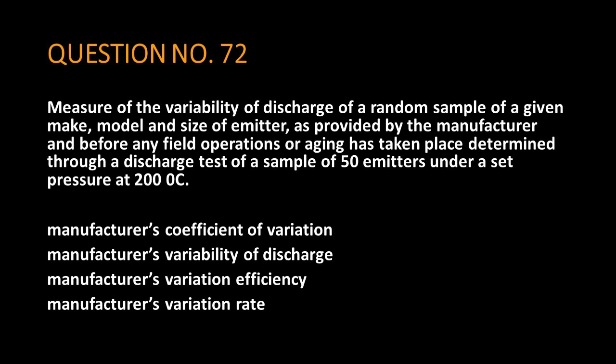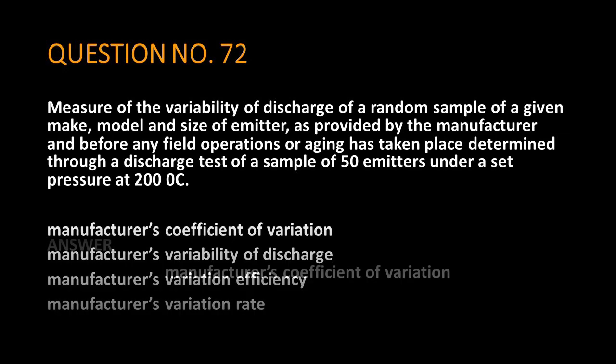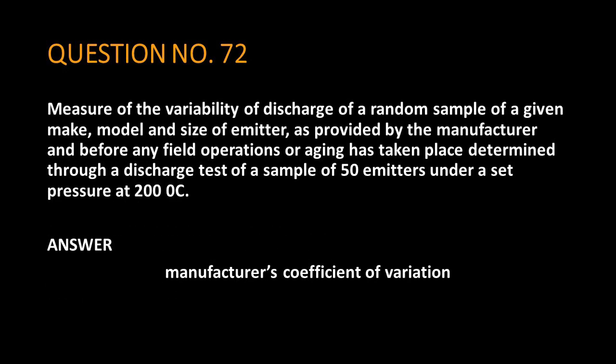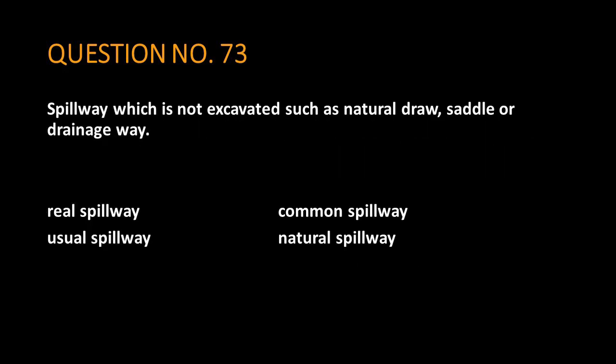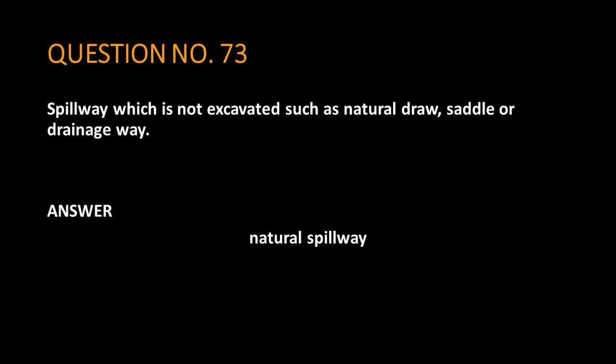Question number 72: measure of the variability of discharge of a random sample of a given make, model and size of emitter, as provided by the manufacturer and before any field operations or aging has taken place, determined through a discharge test of a sample of 50 emitters under a set pressure at 200 degrees Celsius. The answer is: manufacturer's coefficient of variation. Question number 73: spillway which is not excavated such as natural draw, saddle or drainage way. The answer is: natural spillway.